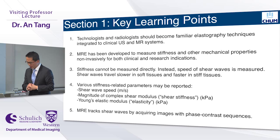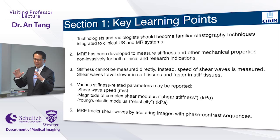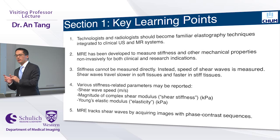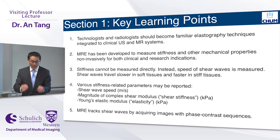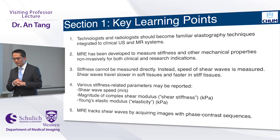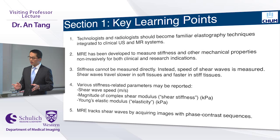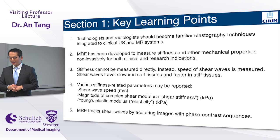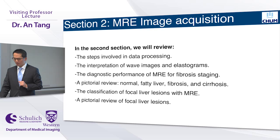Key learning points for the first section: elastography is an emerging field built on existing clinical equipment — ultrasound and MR. It's an exciting revolution, and the theoretical resolution potential is in the range of microns. The tissue contrast mechanism is different — it's not T1, T2, diffusion, or arterial spin labeling; it's mechanical properties in a very advanced way. MRE has been developed to measure stiffness for both clinical and research applications. Stiffness cannot be measured directly; instead we measure shear wave propagation converted into stiffness. The magic happens by tracking shear waves with phase contrast sequences also used in other MR applications.